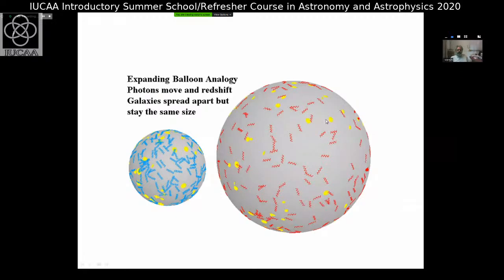The wheels here represent waves of photons. At earlier times the wavelength was smaller; as the universe expanded, the wavelength became larger and the photons redshifted. Today, these photons appear to us as the cosmic microwave background at a temperature of almost three degrees Kelvin.